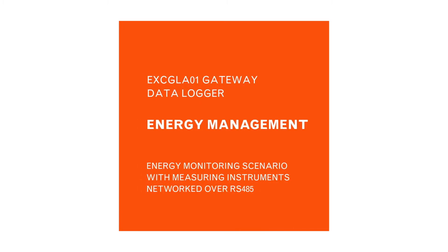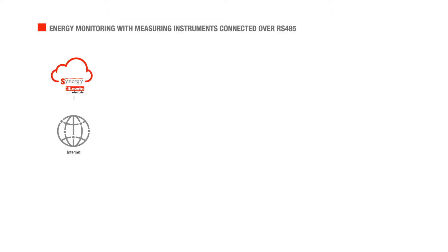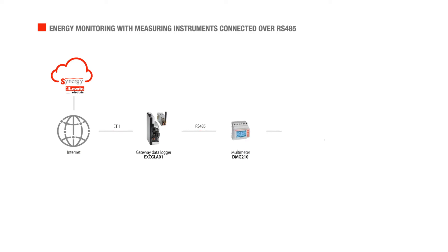A typical monitoring scenario uses two or more instruments connected in a cascade configuration, such as in a switchboard or in a single work area. In this case, the connection to the Gateway Data Logger EXCGLA01 is direct.